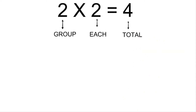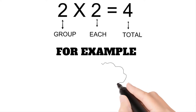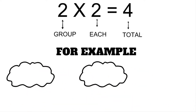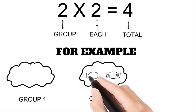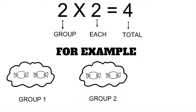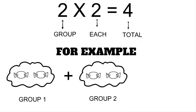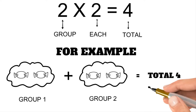Let's understand how this equation works. We have two groups — group one and group two. In each group, we have two sweets. When we add these two groups together, we will get a total of four sweets.